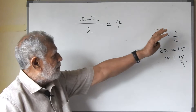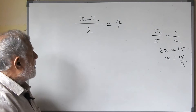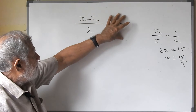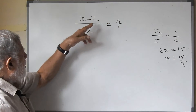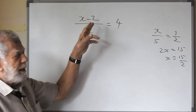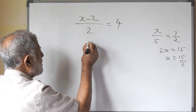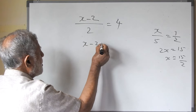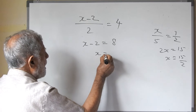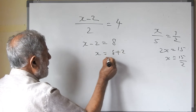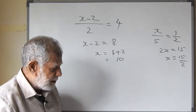So here, because we have two fractions, we cross-multiply. This is one fraction, and 4 is 4 upon 1 always. So the numerator is x minus 2, the denominator is 2. We cross-multiply: x minus 2 is equal to 8. So x is equal to 8 plus 2, that is equal to 10.